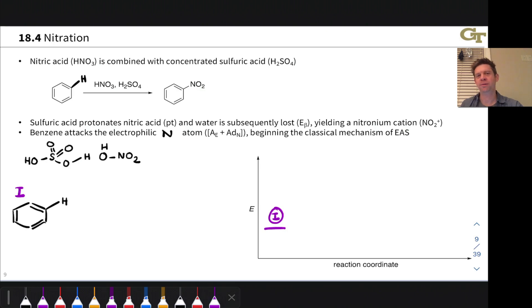In a nitration reaction of benzene or another aromatic, nitric acid is combined with sulfuric acid to generate the active electrophile, which is the nitronium cation. And what we end up with is a nitro group linked to the benzene ring in the product where there was an H before.